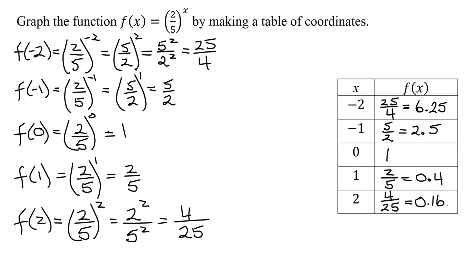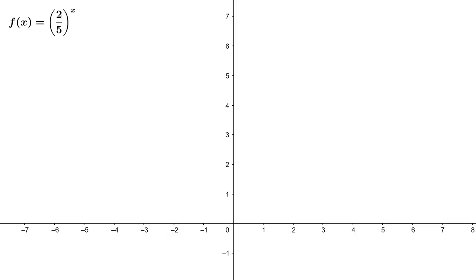Now we have our points, we're ready to graph our function. Plotting our points, the first point we found was when x equals negative 2, the y value was 6.25. Next point, x is negative 1, y was 2.5. Next point, 0, 1. Next point, 1, 0.4. And the last point we calculated was when x is 2, y was 0.16.